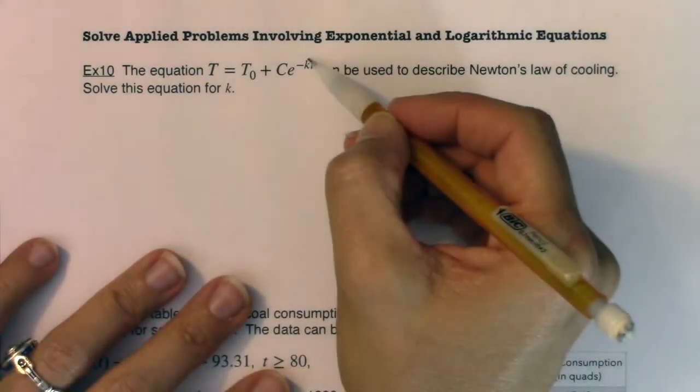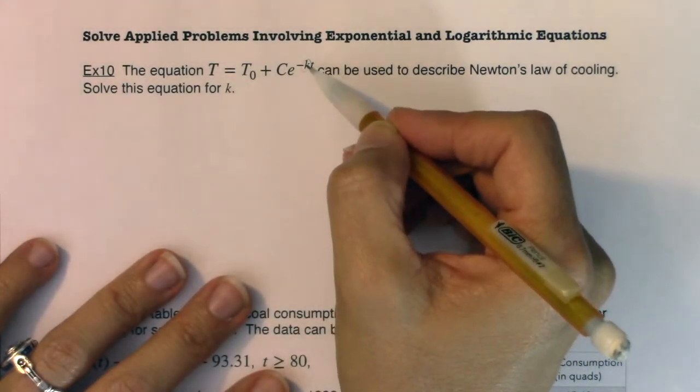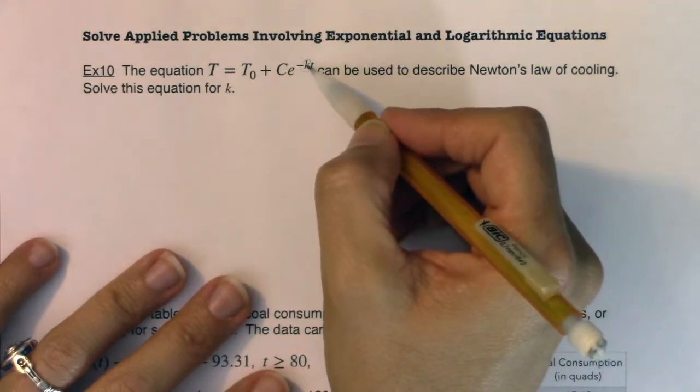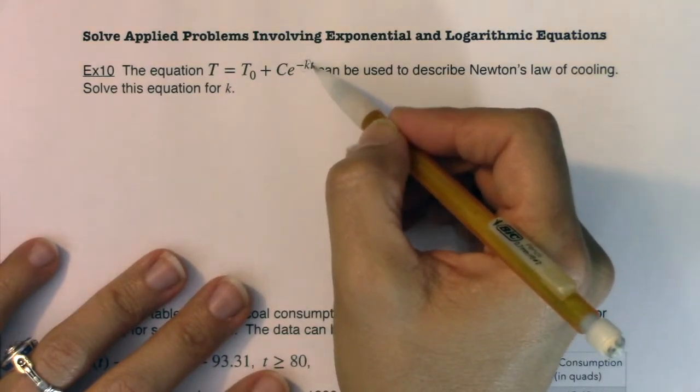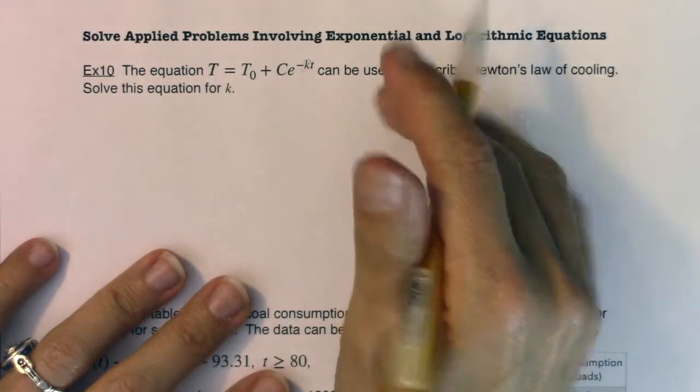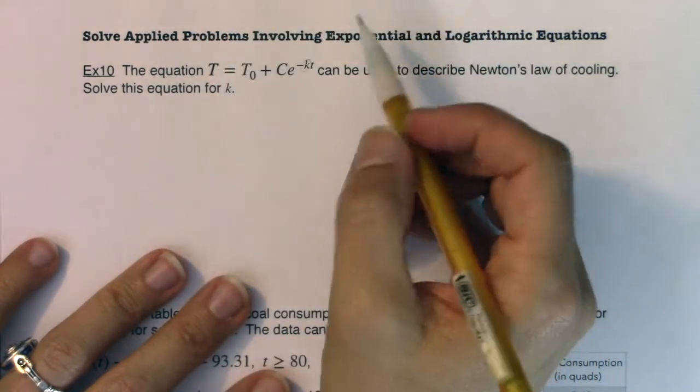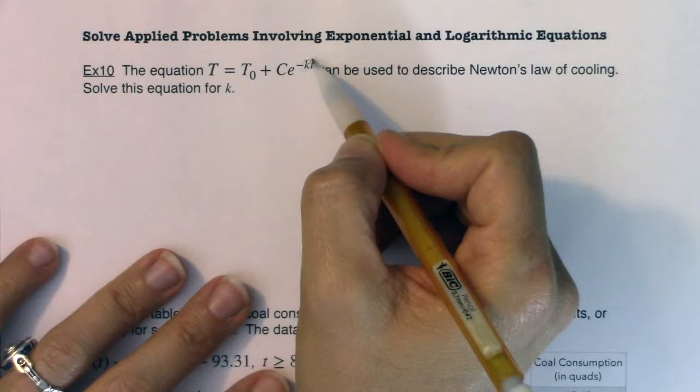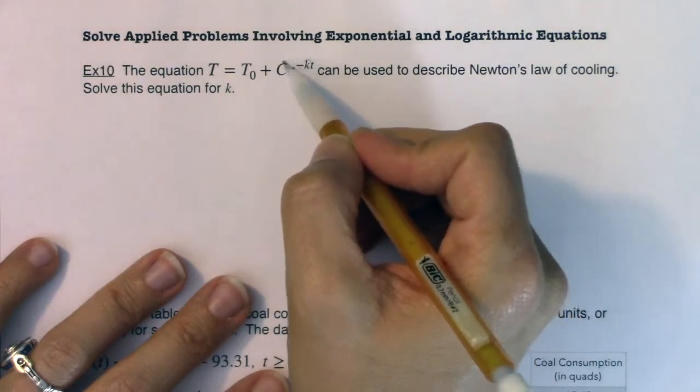All I want us to do is solve for this k. And keep in mind that k is up in the exponent. So I need to get this all by itself. We need to get this all by itself. What algebra do we want to do? If I got to get the k all by itself, I need to isolate this exponential term.